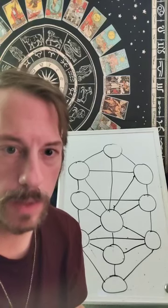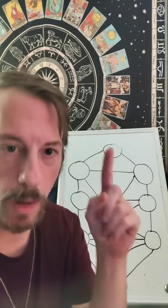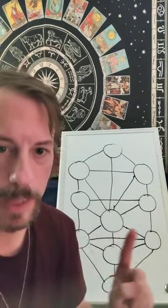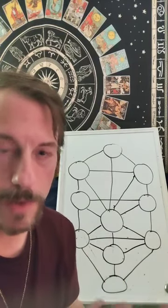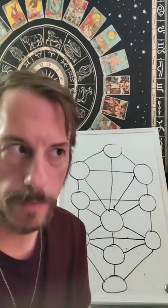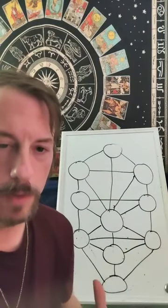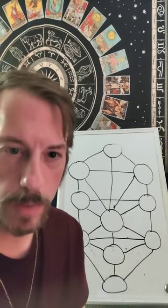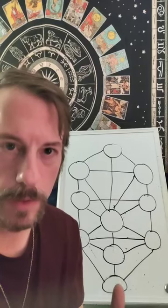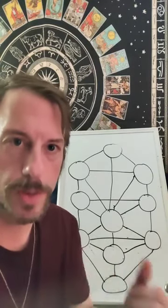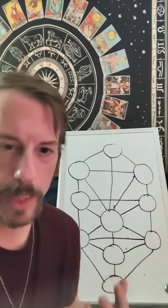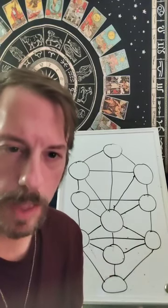In the Tarot, all aces go to Keter. All twos, threes, fours, fives, sixes, sevens, eights, nines, and tens of all four suits correspond to the Sephirot. The minor arcana — meaning cards one through ten of the four suits — are basically the ten Sephirot in the four Kabbalistic worlds and the four elements. Numbers one through ten of wands represent the ten Sephirot in the element of fire; cups are water; swords are air; and discs are earth.